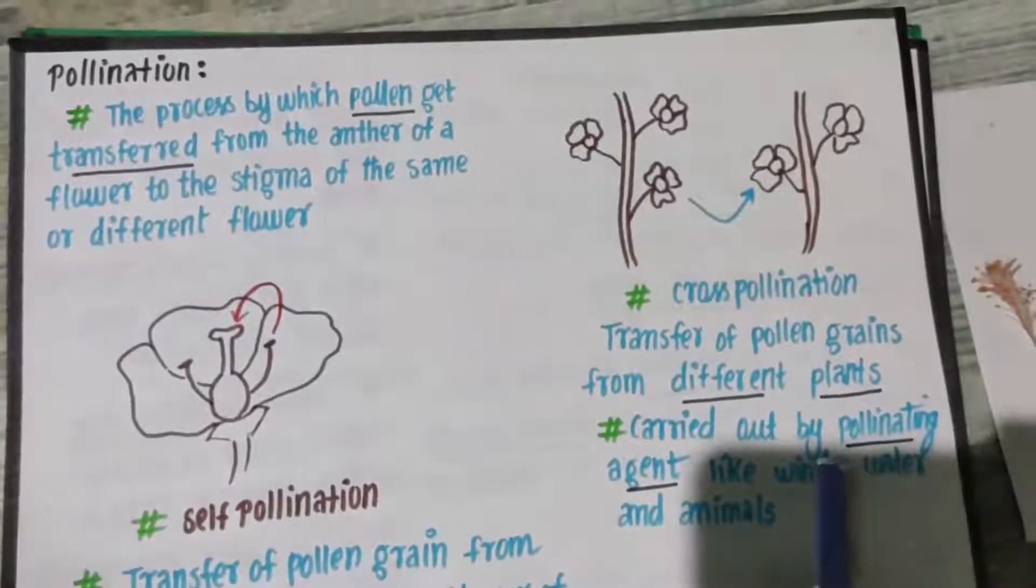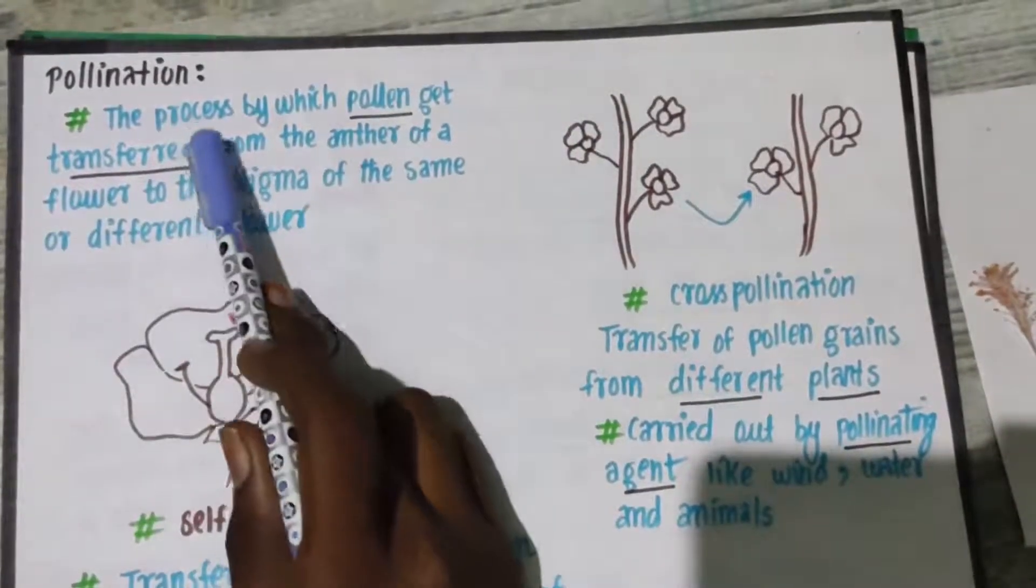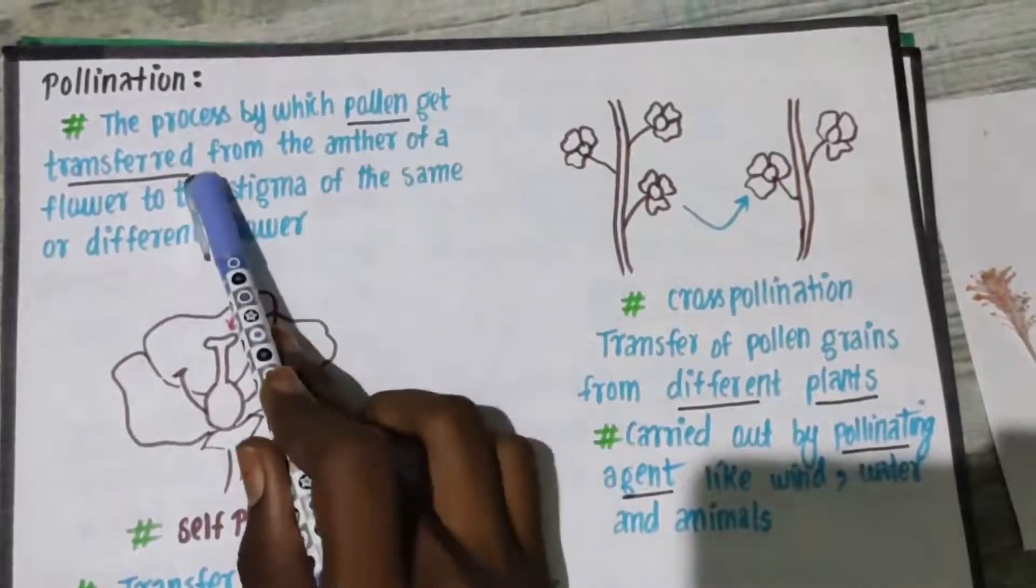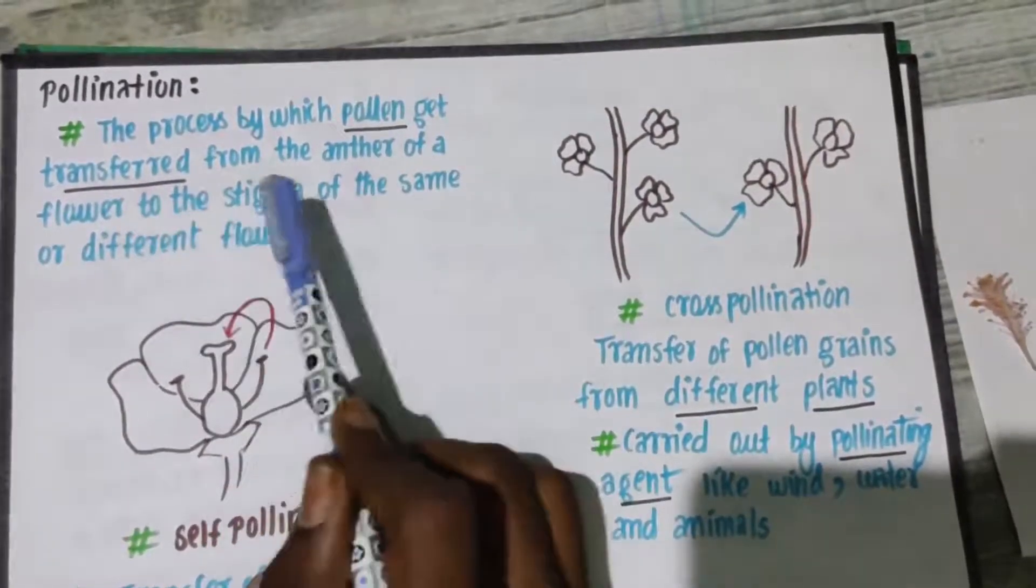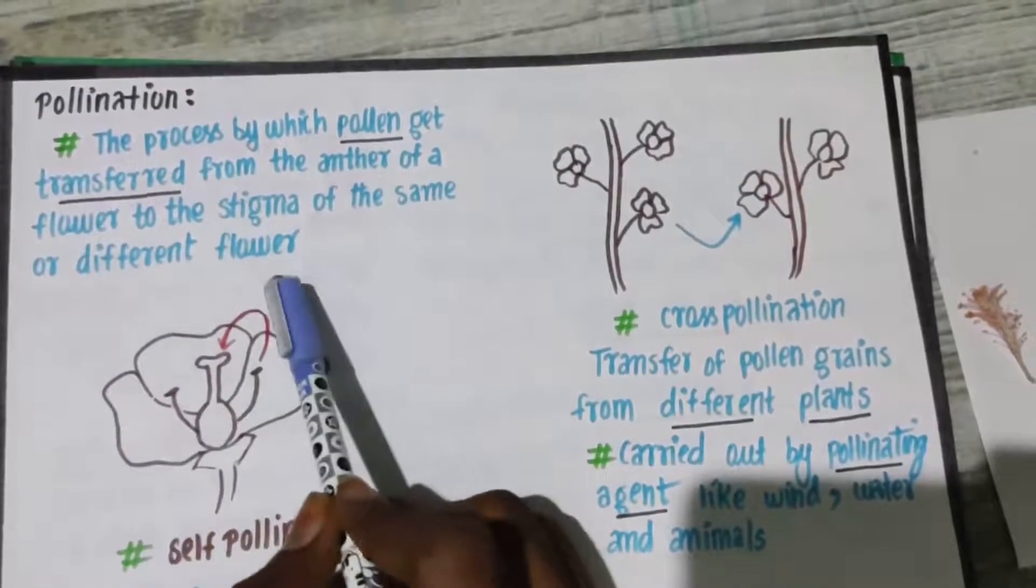Students, welcome to this video. Now, pollination is a process by which pollen gets transferred from anther of a flower to the stigma of the same or different flower.